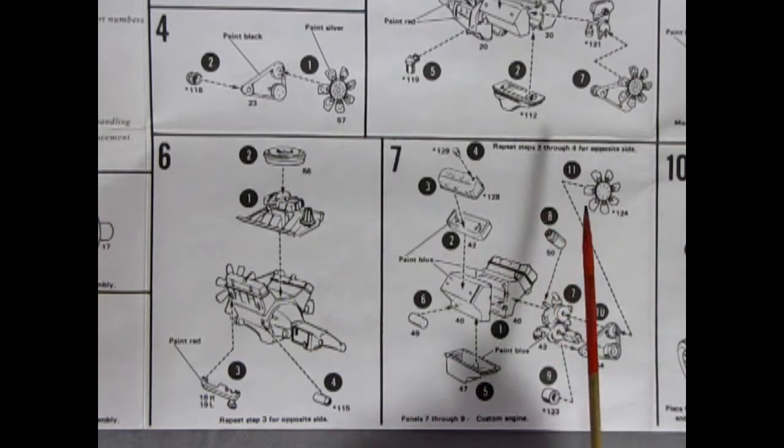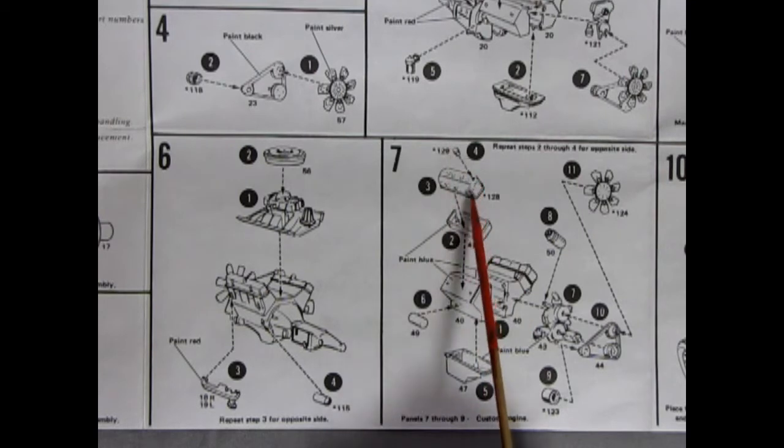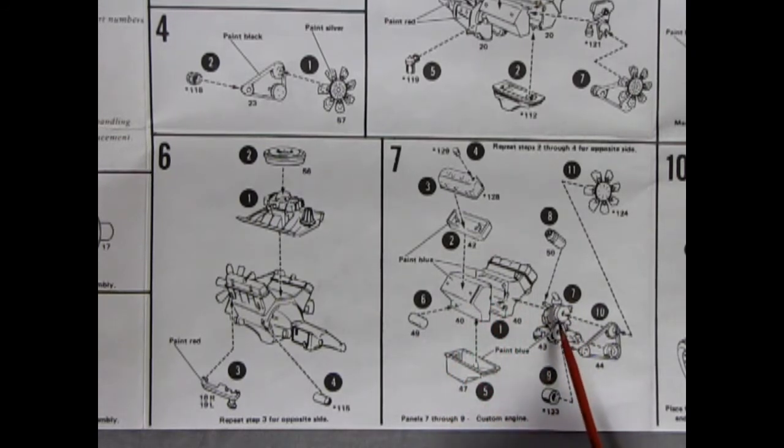Panel seven shows our 426 Hemi going together. We've got the breathers going on the valve covers as well as our cylinder heads gluing onto our two piece engine block, our starter motor gluing on the side, our oil pan, then we've got our front engine cover, our belts, the alternator, the fan with the clutch, and our oil filter gluing all into here.